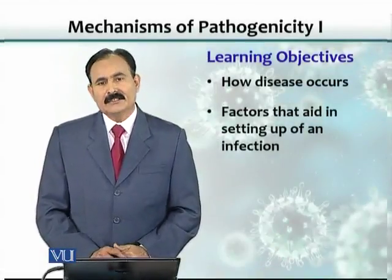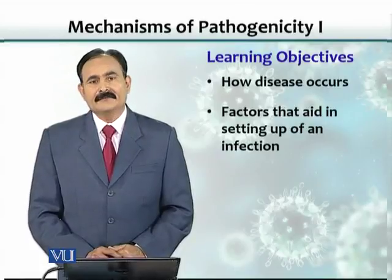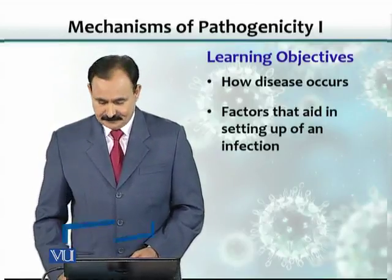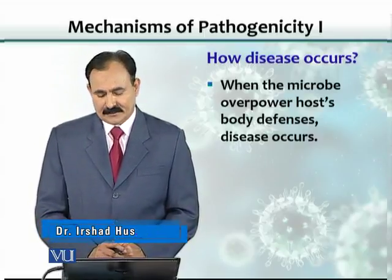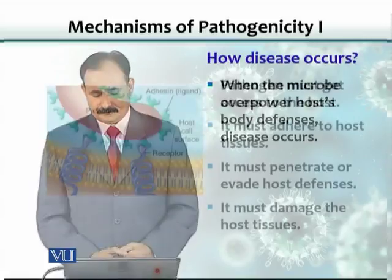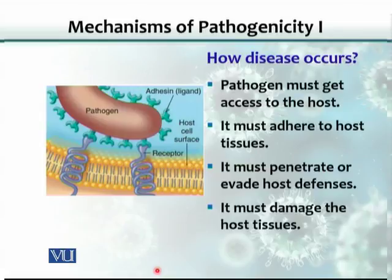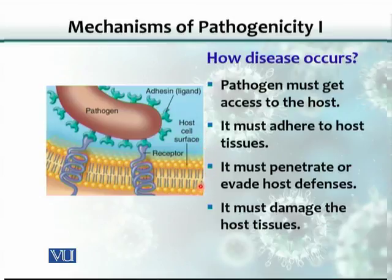Learning objectives include how disease occurs and what various factors aid in setting up an infection. Disease occurs when microbes overpower the host body's defenses. There are conditions that must be met before an infection converts to disease: the pathogen must get access to the host, attach to body cells, penetrate the host's defenses and get into the cells, and then cause damage to cause dysfunction or disease.